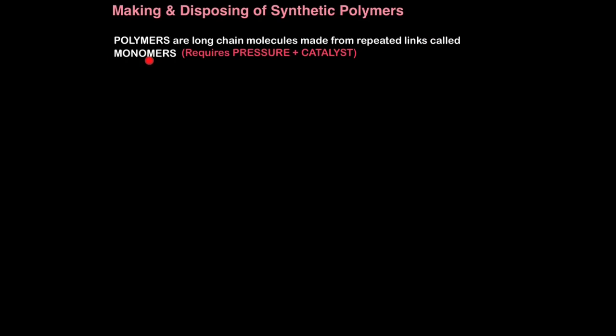Now let's look at how we make and dispose of synthetic polymers, commonly known as plastics. What is a polymer? Poly means many. A polymer are long chain molecules made from repeated links called monomers. Mono means one. From one link, we make a long chain of many links, poly and mono. It requires pressure and a catalyst.